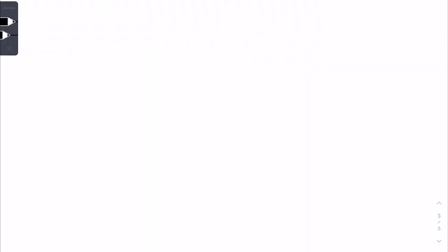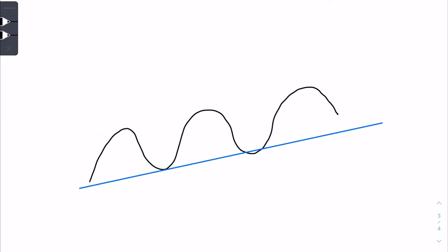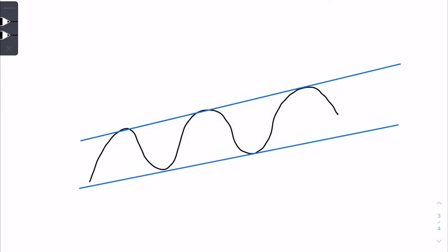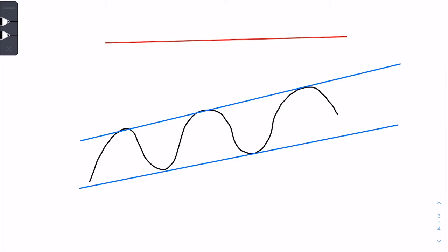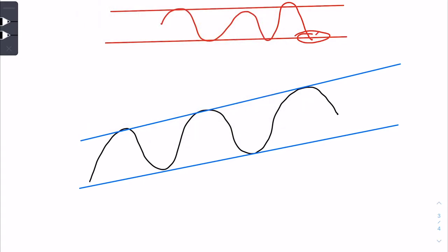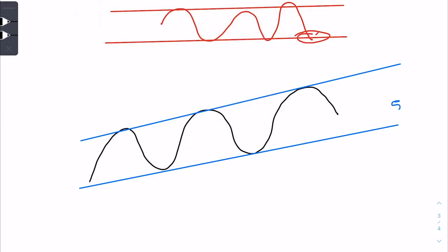My strategy is to find stocks that are in a channel with multiple indicators showing a buy signal — like the DeMarker indicator, the MACD, and the Stochastic RSI. Once the stock moves to the low of the channel, let's say it's at $50, that's where I'm going to buy and I expect a bounce back from that level.